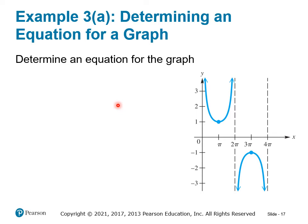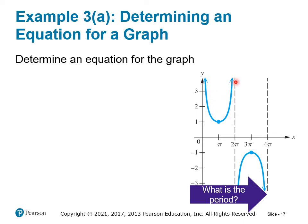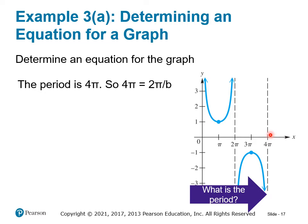What happens when we need to determine an equation from a graph? First, think about what the period is. Notice this graph has an up shape and then a down shape occurring between 0 and 4π, so the period is 4π. Remember that the new period equals 2π over the period adjuster variable B. So if our period is 4π, we solve 4π = 2π/B and get B = ½.